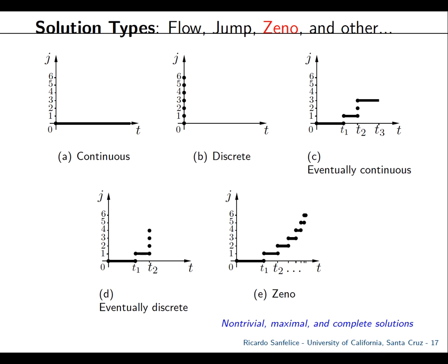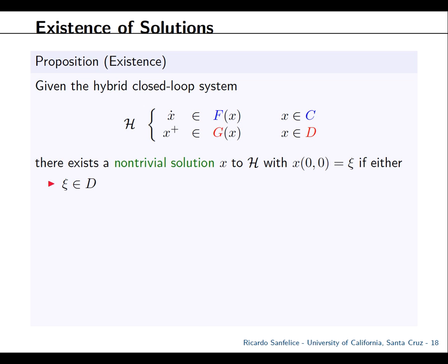Here is the Zeno-type behavior: after a bunch of impacts, the time between impacts gets smaller and smaller because the ball's energy decreases. You can compute it as a series where the sum converges to what we call the Zeno time, named after the Zeno paradox.